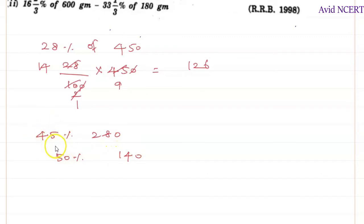Then 5% we have to look for. 5% can be found - you can directly find 5% the same method, 5 by 100 into 280. Or you can find 10%. 10% is always 280 by 10, which is 28.